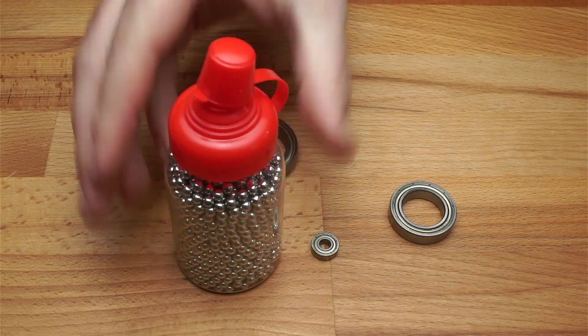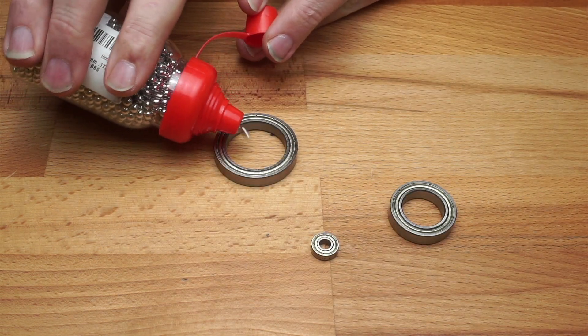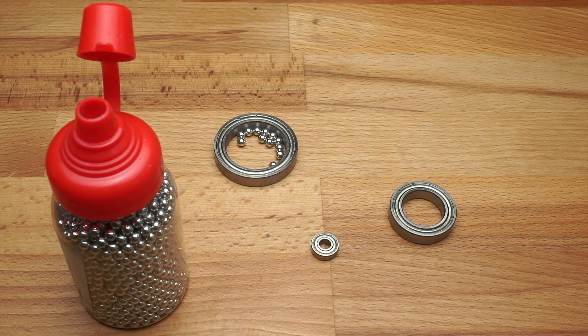I don't trust my 3D printer to print perfect spheres for the ball bearings, so I've picked up some steel BBs. These are dirt cheap, about £5 for 1500.